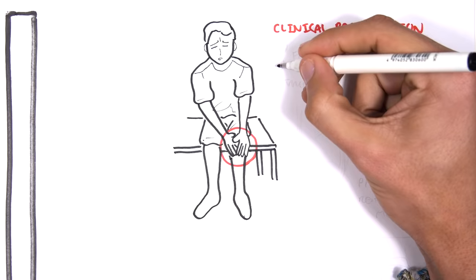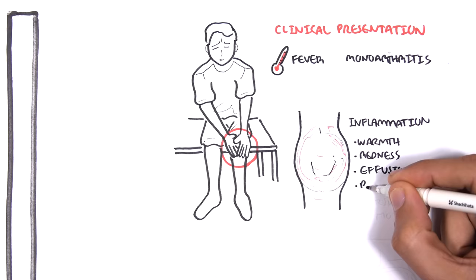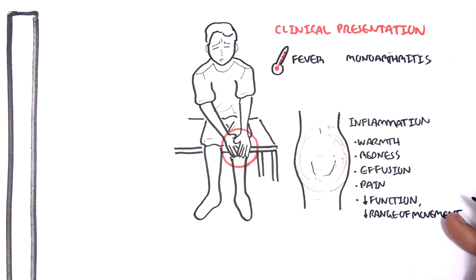Signs and symptoms of septic arthritis include fever and monoarthritis, which means one inflamed joint. Inflammation of the joint is characterized by warmth, redness, pain, and decreased function or range of movement.